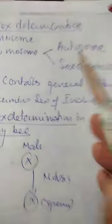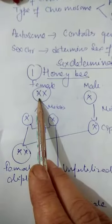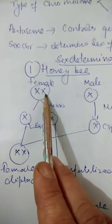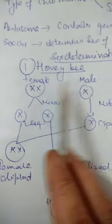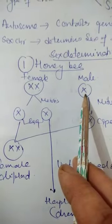Chromosomes can be autosomes, which determine general body characteristics, or sex chromosomes, which determine the sex of an individual. Now discussing sex determination in honey bees: the female has XX chromosomes — one pair — and the male is haploid, having only one X chromosome.